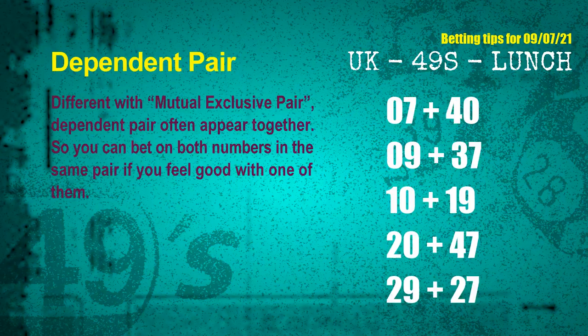Some numbers are dependent — in the same dependent pair, you can bet on both, because they are often drawn in one draw. The dependent pairs for the next draw are: first pair 07 and 40; second pair 09 and 37; third pair 10 and 19; fourth pair 20 and 47; fifth pair 29 and 27.